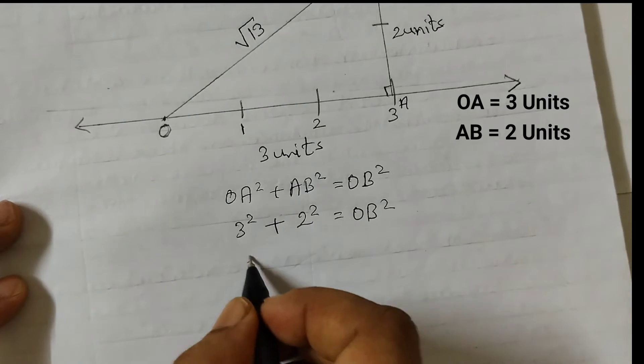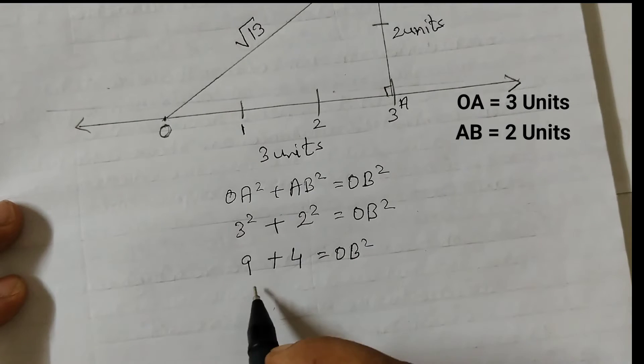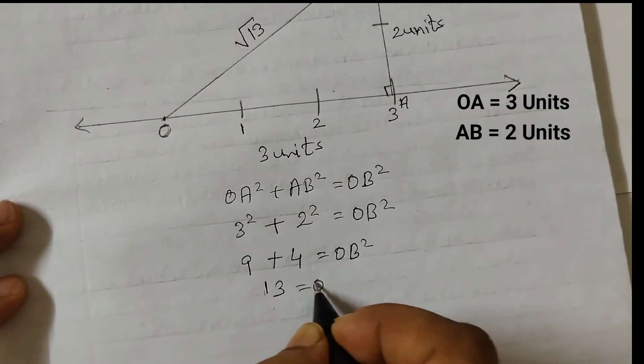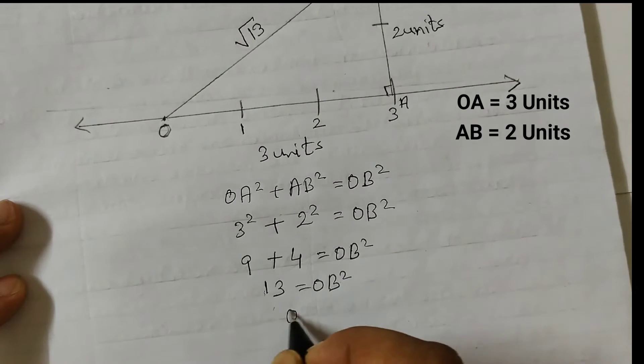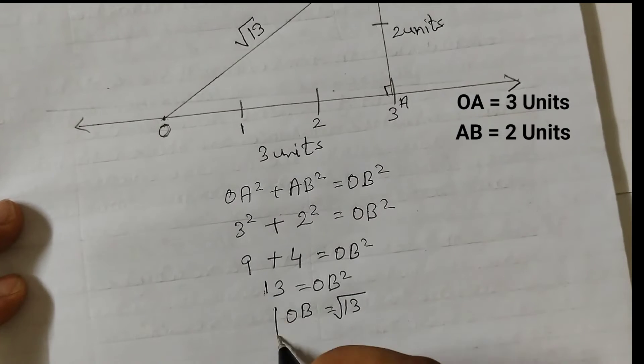3 × 3 = 9, and 2 × 2 = 4, so OB² = 9 + 4 = 13. Therefore, OB = √13.